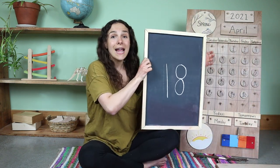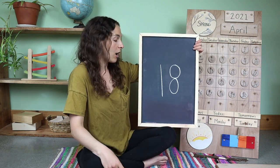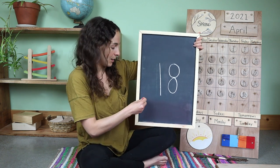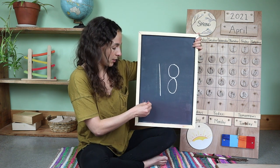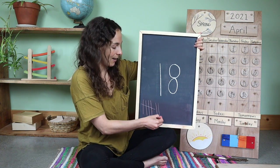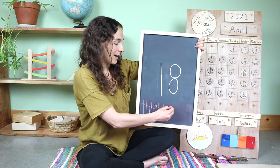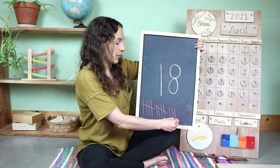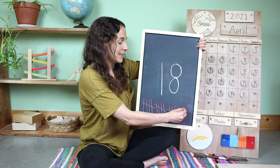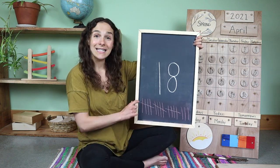Now let's count 18 tally marks together. Remember, friends, tally marks are just lines that I'm going to draw on the bottom of the chalkboard so we can count together. Are you ready? One, two, three, four, five goes across, six, seven, eight, nine, ten goes across, eleven, twelve, thirteen, fourteen, fifteen goes across, sixteen, seventeen, and one more is eighteen. Eighteen tally marks.